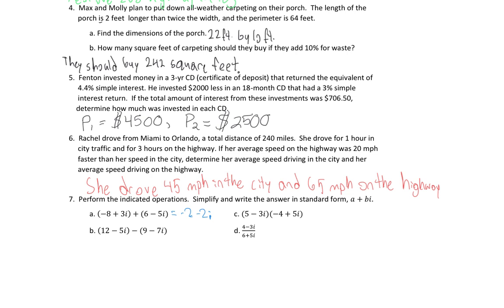For part B we need to be more careful. I'll distribute the minus sign first: 12 minus 5i, and minus 9 plus 7i becomes minus 9 plus 7i. Combining: 12 minus 9 is 3, and minus 5i plus 7i is plus 2i. So the answer is 3 plus 2i.